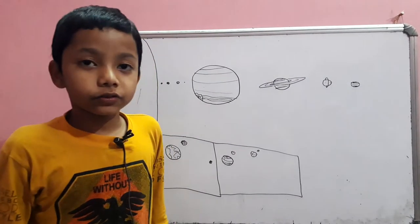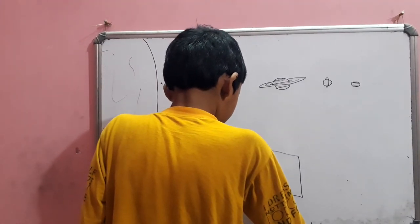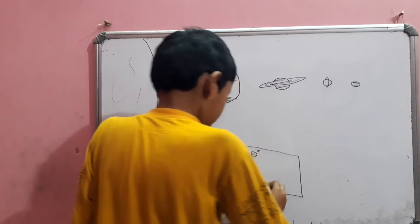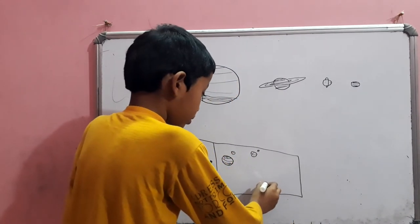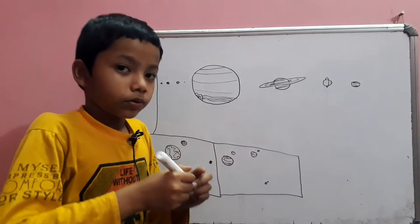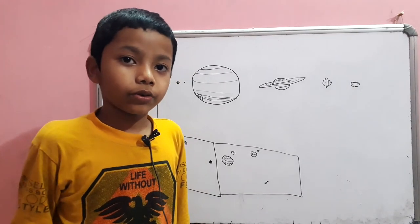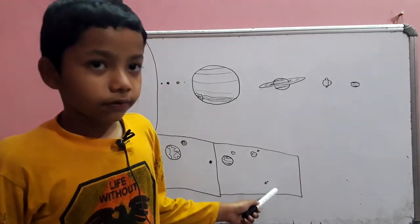Now, I'm going to draw Makemake. This is Makemake, and it has a moon called MK2. It's just right here.